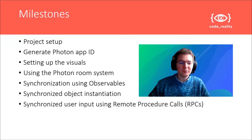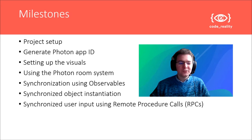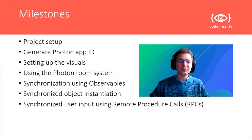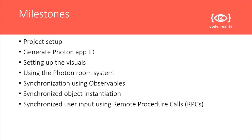For the milestones, we will go over the project setup, then create a Photon app ID to connect to the Photon servers, authorize the app, and synchronize everything. We will set up the Earth visuals, then create a room system with Photon so we can join different sessions. We will then synchronize using different methods: observables, instantiating objects in the scene like pins, and messaging using remote procedure calls to synchronize user input.